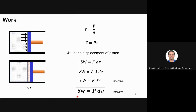This is how we define work in a thermodynamic process: P·dV. This is the simplest form of work, which is called displacement work. You could have electrical work or surface tension work, but in thermodynamics we are generally referring to this work, which is called P·dV work or displacement work.